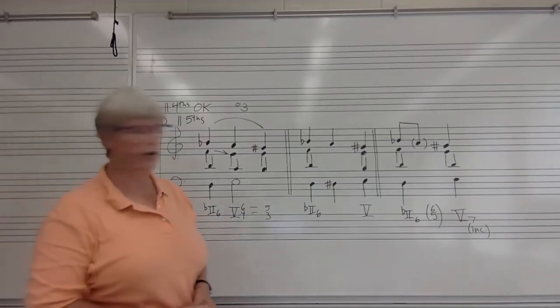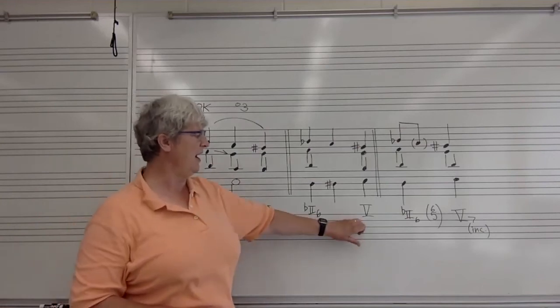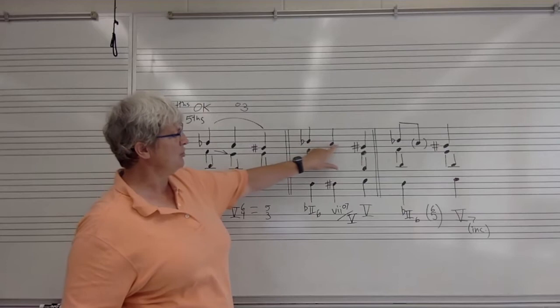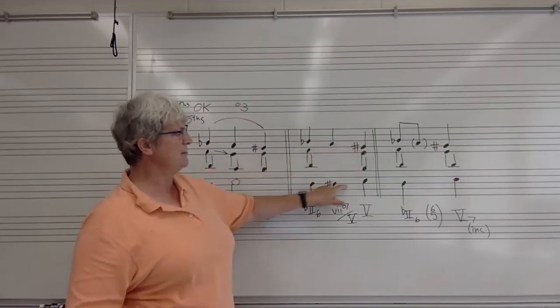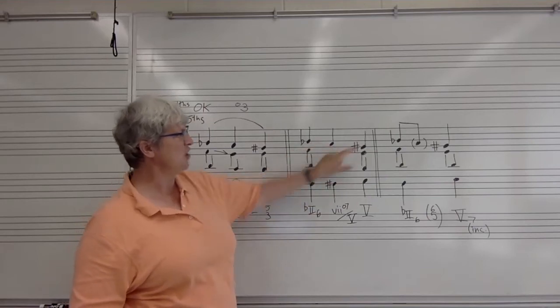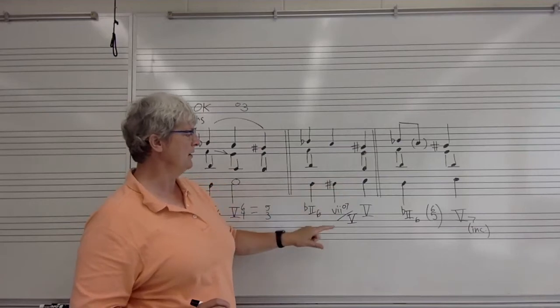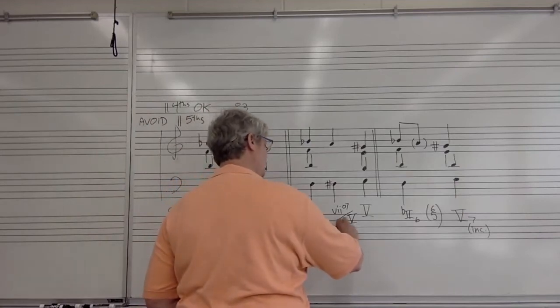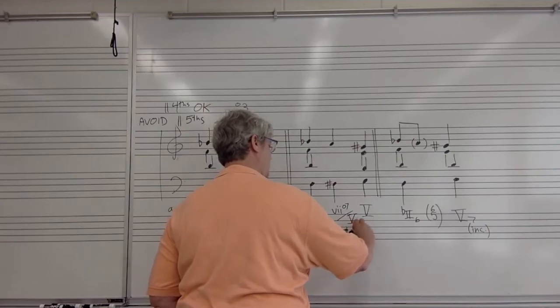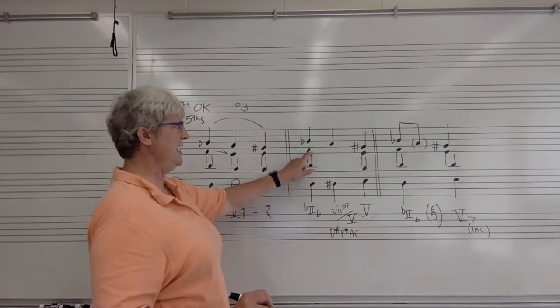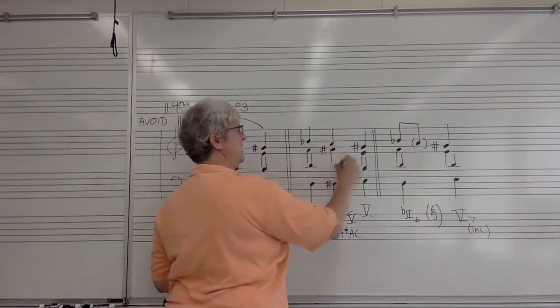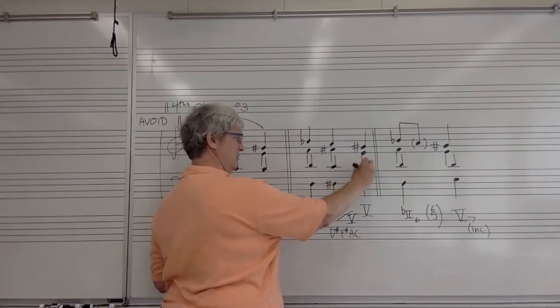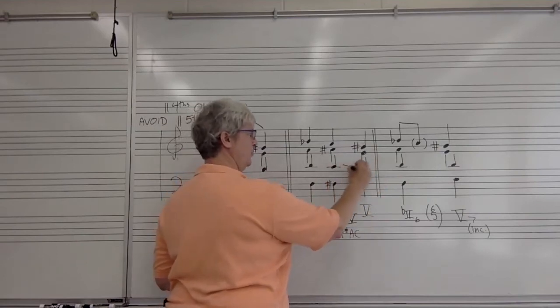The other chord that can be used as a passing chord to connect the flat two six with the five is the seven diminished seven of five. There we have the half step passing motion in the soprano, and we're also going to have it in the bass. So we have got B-flat, A, G-sharp in the soprano. In the bass, we're going to have D, D-sharp, E. Let's think about what seven diminished seven of five is. A diminished seventh is going to be D-sharp, F-sharp, A, C. So Le is going to turn into La and then resolve down to Sol. And here again, we'll have the passing motion, Fa, Mei, Re, and the chordal seventh will resolve down as it has to.